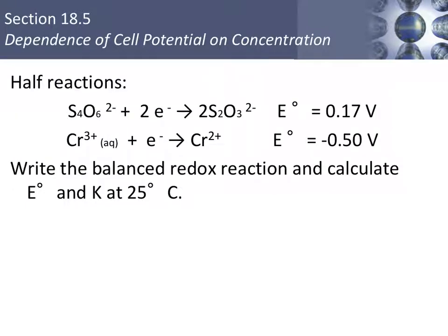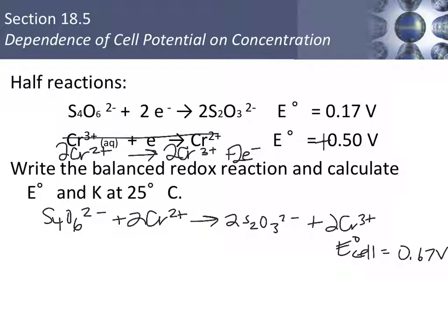So in this problem, we have some half reactions. We're going to write the balanced redox reaction, calculate the standard cell potential and the equilibrium constant at 25 degrees Celsius. All of these things are marked standard. It doesn't say we're not at 1 molar, so we are going to proceed with the standard cell potential. Let's use the second half reaction as our oxidation. We'll flip it around, and that's a positive 0.5 volts then. And then we need to multiply that equation by 2 to get the electrons to balance. Do not double the voltage. Here is our balanced cell reaction, and the standard cell potential is 0.67 volts.